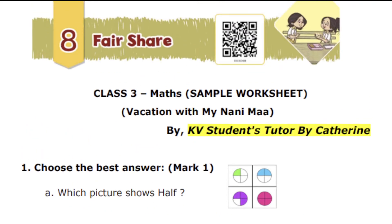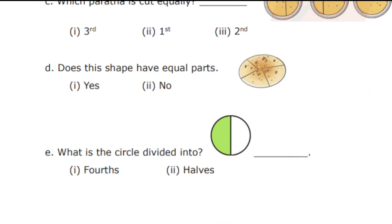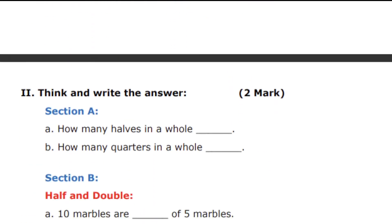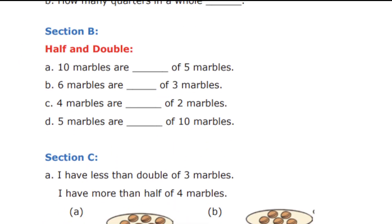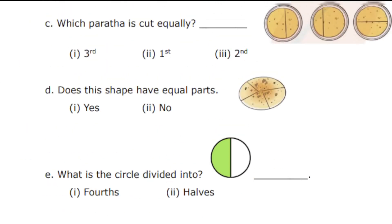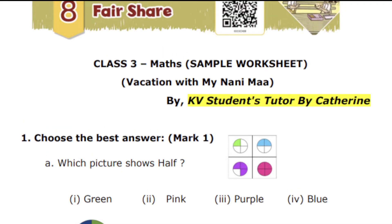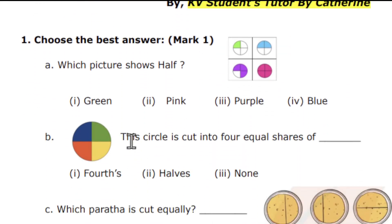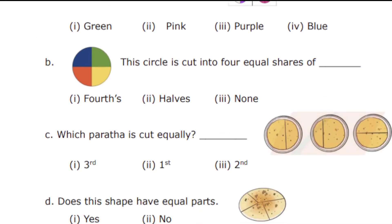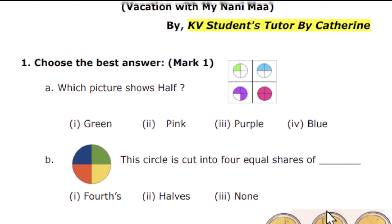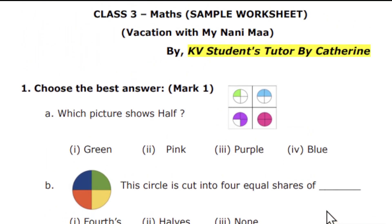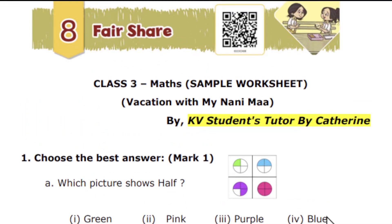So this chapter fair share — I have given options for choose the best answer in session A, session B, session D, and session E as well. Questions include: which picture shows half, this circle is cut into four equal shares of dash, and which paratha is cut equally? I hope you all can answer these questions because these are the same we discussed in the chapter fair share.